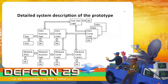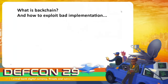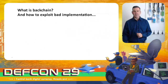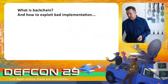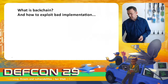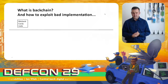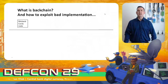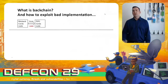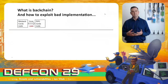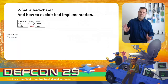We also have lots of other payment service providers in our prototype, so we can do PSP-to-PSP payments. What is backchain and how do you exploit a bad implementation? To explain this in a very simple way: the Riksbank has a Corda node, and if a payment service provider needs tokens — money — it asks for an issue, and the Riksbank makes that issue.